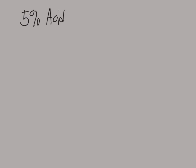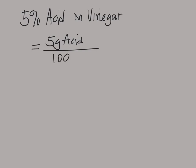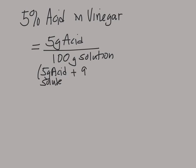Let's go back to that 5% acid on the vinegar label. 5% tells me I have 5 grams of acid for every 100 grams of solution. That 100 grams of solution is composed of 5 grams of acid, which is my solute, and 95 grams of water, which is the solvent. Those two added together give the total mass of the solution.